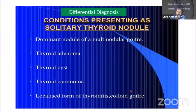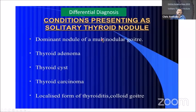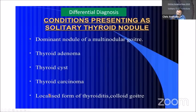When a patient comes with a solitary nodule, the differential diagnoses include: a dominant nodule in a multinodular goiter (very common), a thyroid adenoma, a thyroid cyst, thyroid carcinoma, or a localized form of thyroiditis or colloid goiter. Autoimmune disease is the most common form of thyroiditis.